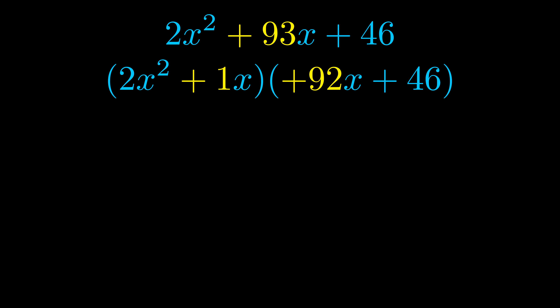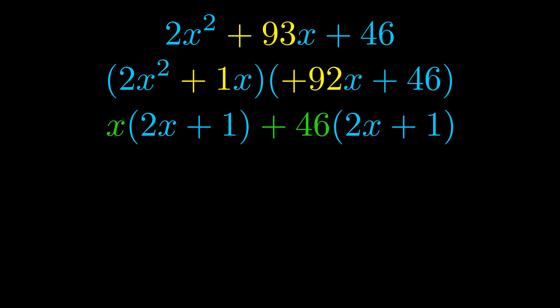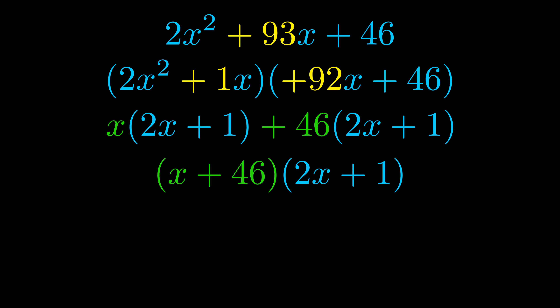This is the only factor pair that we need. Once we have this factor pair, we want to use it to split up the b value. Notice how the first term and the last term stay completely unchanged — it is only the b term, highlighted in yellow, that gets expanded into this correct factor pair.